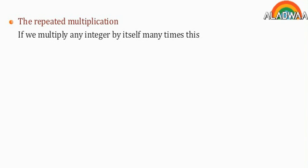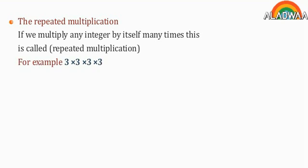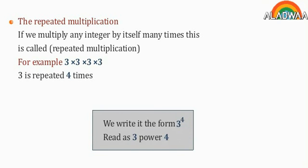Lesson 5: The Repeated Multiplication. If we multiply any integer by itself many times, this is called repeated multiplication. For example, 3 times 3 times 3 times 3. The number 3 is repeated 4 times. We write it in the shown form, and we read it as 3 to the power 4.